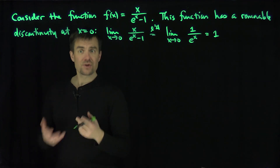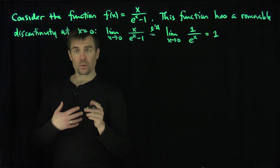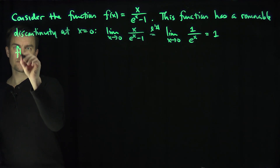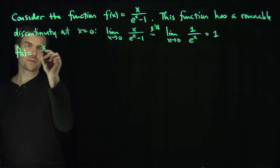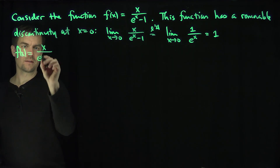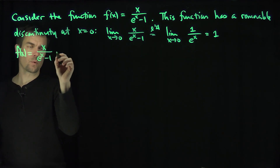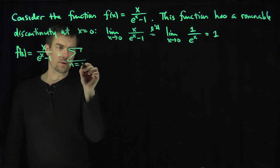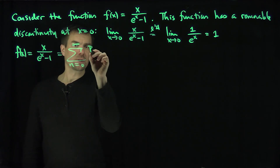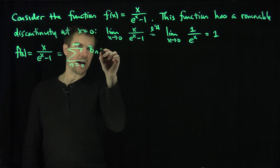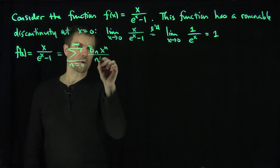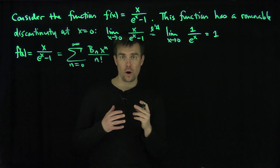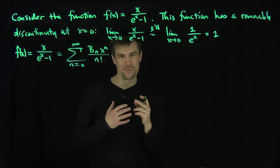So we can write down its Taylor expansion at x equals 0. The Taylor expansion of f(x) = x over e to the x minus 1 is the sum from n equals 0 to infinity of some numbers b_n times x to the n over n factorial. These numbers b_n are called the Bernoulli numbers.